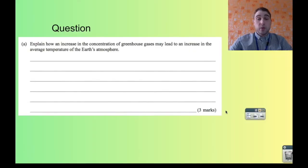So here we have a question. It says, explain how an increase in the concentration of greenhouse gases may lead to an increase in the average temperature of the Earth's atmosphere. So if you increase the concentration of greenhouse gases, you increase the amount of heat energy that's being trapped in the atmosphere. Or conversely, you reduce the amount of heat energy that gets emitted out into space.